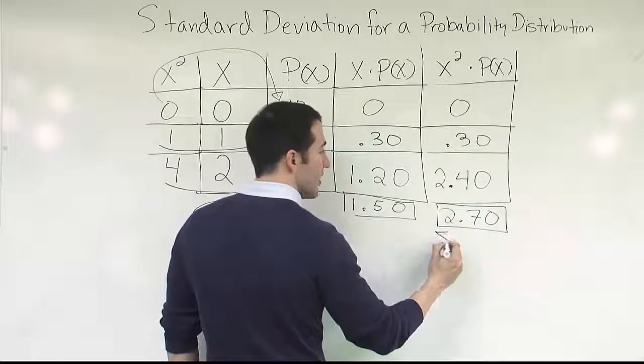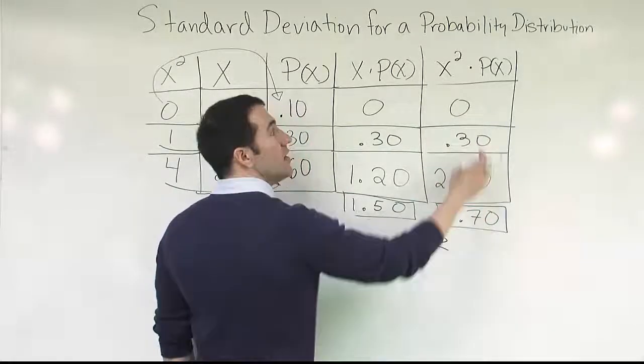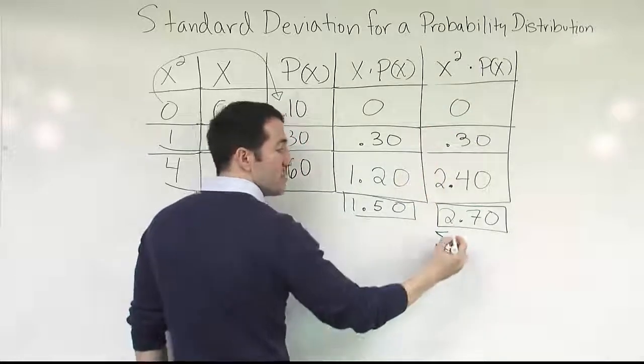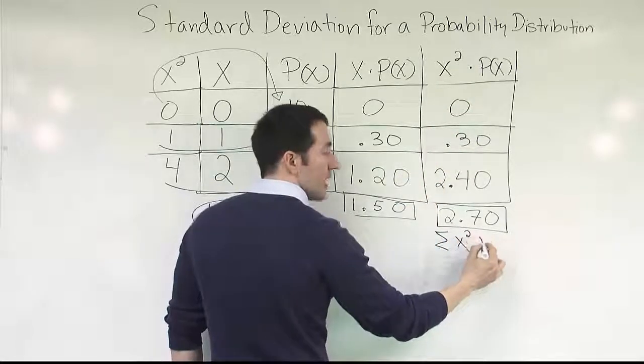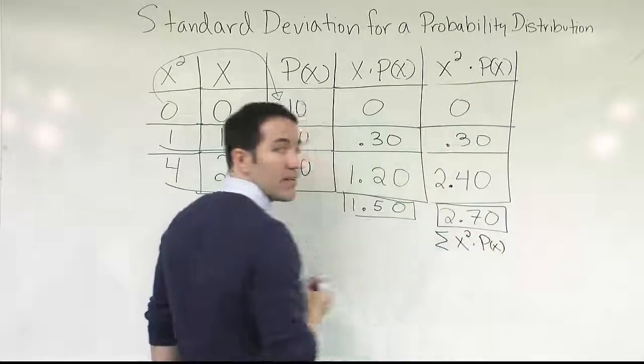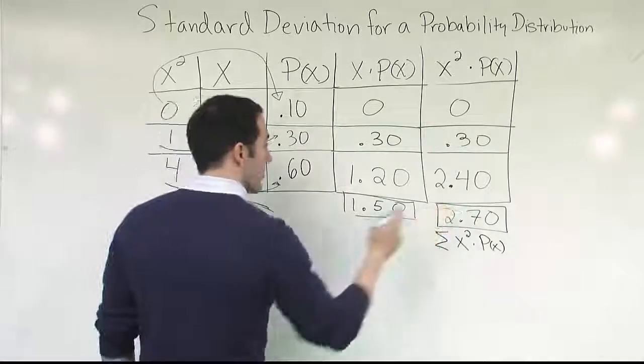Remember that this guy has a name. We can call that the sum, right? We added something up to get it. It was the sum. The sum of what? x squared times p of x. So x squared times p of x. That's what we have. Okay. So this is the number we need for our formula.